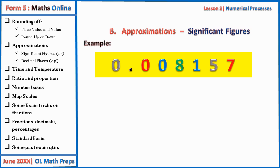Let's take the number 0.000815 7. To one significant figure, note the first significant figure is the first digit that is not a zero, which here is eight. So to one significant figure, we move to position eight and ask: will the one after eight affect it? The answer is no, so to one significant figure this number becomes 0.0008.